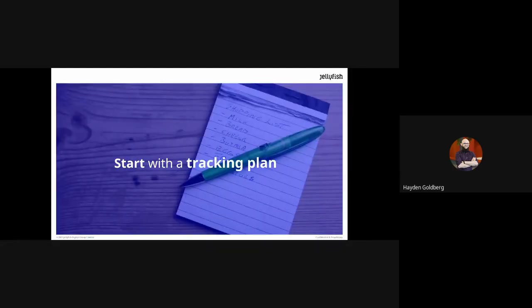I'll start with the first point: start with a tracking plan. It is important as a business to know the data that you want to collect, plan for it, and know where it will be used and by whom. So often, especially working in an agency with multiple brands, people will come and say 'we need analytics, please go track our website' — and that's the brief. But your data and analytics people are going to be the core of your business — data is going in and out, passing to different decision makers at different levels.